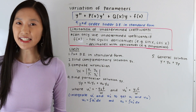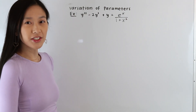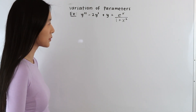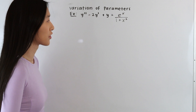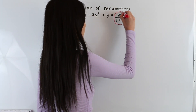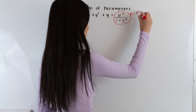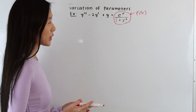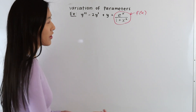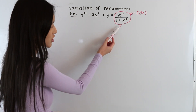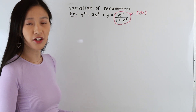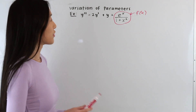Let's take a look at an example and apply this. We have y'' - 2y' + y = e^x / (1 + x²), where f(x) = e^x / (1 + x²). We can see that f(x) does not have cyclic derivatives, and no matter how many times we take the derivative of this function, it will never go to zero. So we need to use variation of parameters to solve this non-homogeneous second-order differential equation.